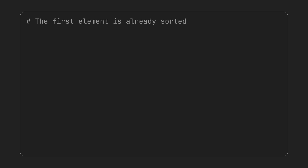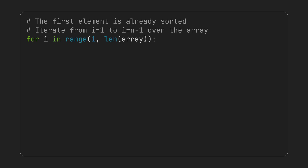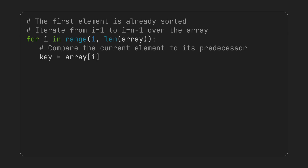Now let's write code for this algorithm. Initially, an array with only a single item is always sorted, so we assume the first item of the array is in the sorted section. We start to iterate from the second item to the last item over the array — this is where we pick the element we want to insert in the right position in the sorted section. We copy the value of the current item to the key, then iterate over the sorted section from the last item to the first to find the correct position.